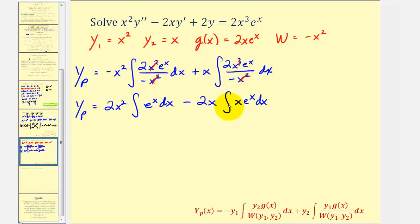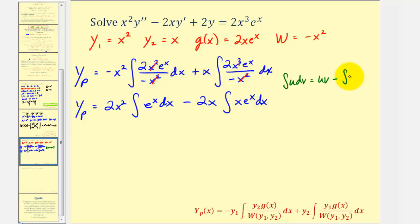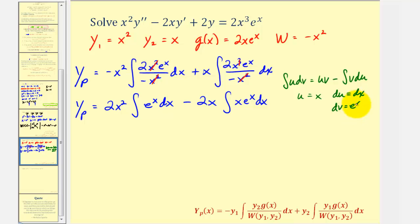Notice that to integrate x e to the x, we'll have to apply integration by parts, which means the integral of u dv is equal to uv minus the integral of v du. So for this integral, we'll let u equal x, so du is equal to dx. Then dv must be equal to e to the x dx, and if we integrate this, we'd have v equals e to the x.